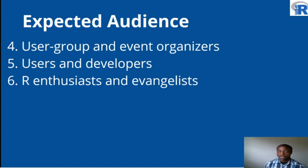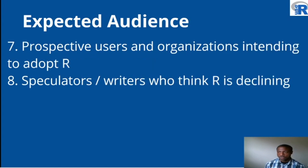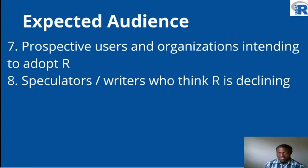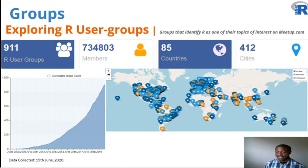We also are looking at user groups and event organizers, users and developers including those who develop R packages, R enthusiasts and evangelists, prospective users and organizations who are considering the adoption of R, and those speculators and writers who think R is declining, unlike the evangelists. In fact, when we look at the data, we see an increasing number of R user groups in the bottom left line chart.